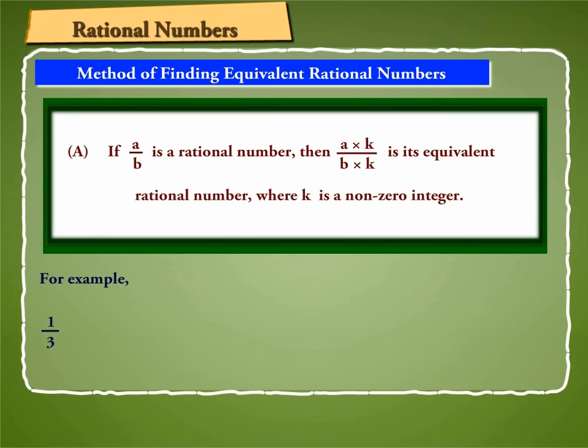For example, 1 by 3 is equal to 1 into 4 by 3 into 4, is equal to 1 into minus 2 by 3 into minus 2. And minus 2 by 5 is equal to minus 2 into 3 by 5 into 3, is equal to minus 2 into minus 3 by 5 into minus 3.